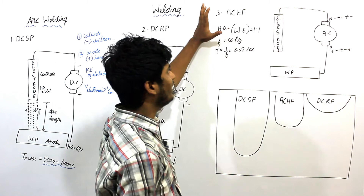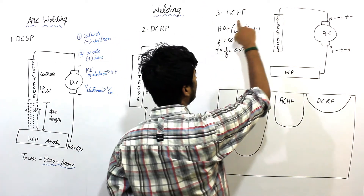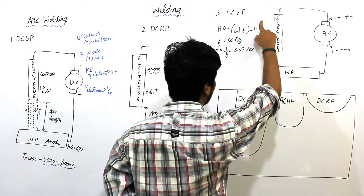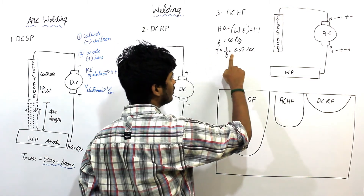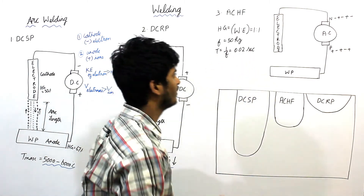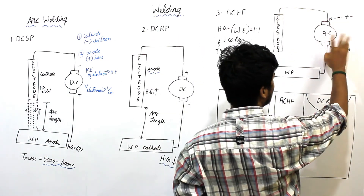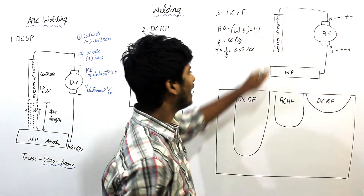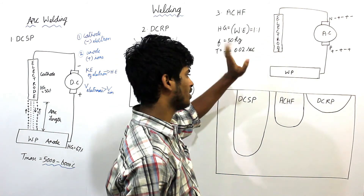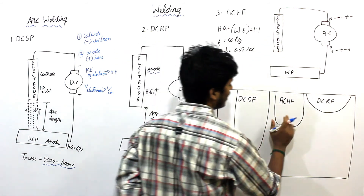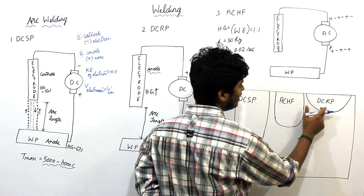Coming to AC-HF, alternating current high frequency: the heat generated at the anode and cathode is in a ratio of 1:1. The frequency is 50 Hz, so the time for one cycle is 0.02 seconds. Here the positive and negative terminals keep changing polarity, so uniform heat is generated at both cathode and anode — at electrode and workpiece. Therefore, the conditions at AC-HF are in between DCSP and DCRP.